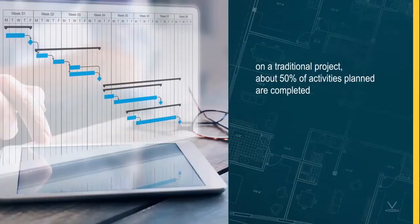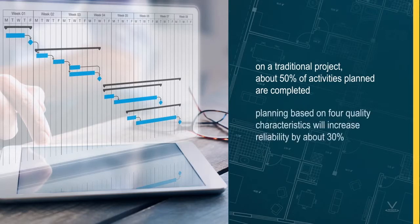Work assignments that are made accounting for these considerations will be much more likely to be completed as planned than if such considerations are not adhered to. This can be verified by measuring the effectiveness of planning, which is accomplished by comparing, at the end of the planning cycle, the number of activities that were indeed completed to the number of activities planned. On a traditional project, about 50 percent of the activities planned are completed. Research has shown that planning based on the four quality characteristics will generally increase reliability by about 30 percent.